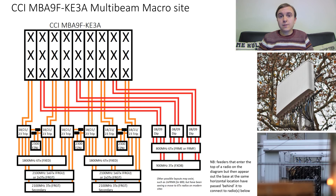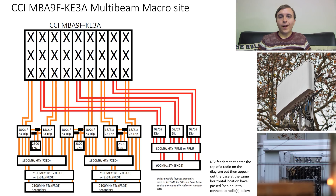On the high band beam side of things, the story is relatively similar. For 1800 MHz they are likely using FXED radios which are 6TX 6RX, and therefore only two of them are required for all six beams of the site. For 2100 MHz they could either be using the 6TX 6RX FRGU radios with one for every three beams, or be using a pair of 3TX 6RX FRGTs per three beams.